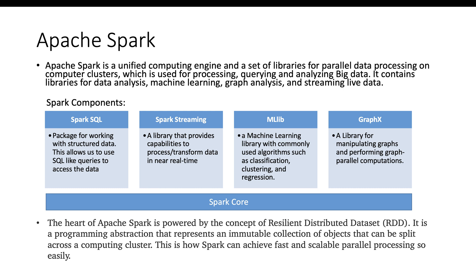Apache Spark contains libraries for data analysis, machine learning, graph analysis, and even streaming live data — because one of the components of big data is that you do end up streaming live data. It is powered by something known as the Resilient Distributed Dataset, or RDD. It is a programming abstraction that represents an immutable collection of objects that can be split across a computing cluster, and that's how you get scalable parallel processing.